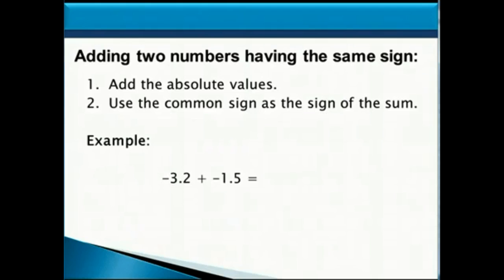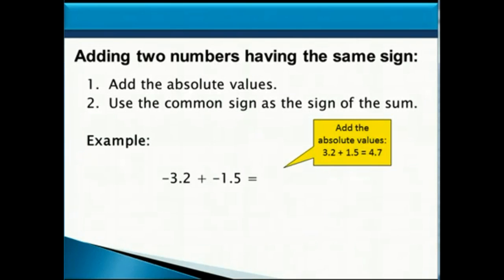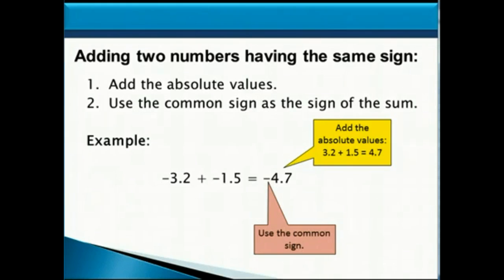Let's look at another example, this time with some decimal numbers. We have negative 3.2 and we're going to add to that negative 1.5. They're both negative numbers, so we add their absolute values: 3.2 plus 1.5 equals 4.7. We use the common sign, which is negative, as the sign of our answer, so our answer becomes negative 4.7.